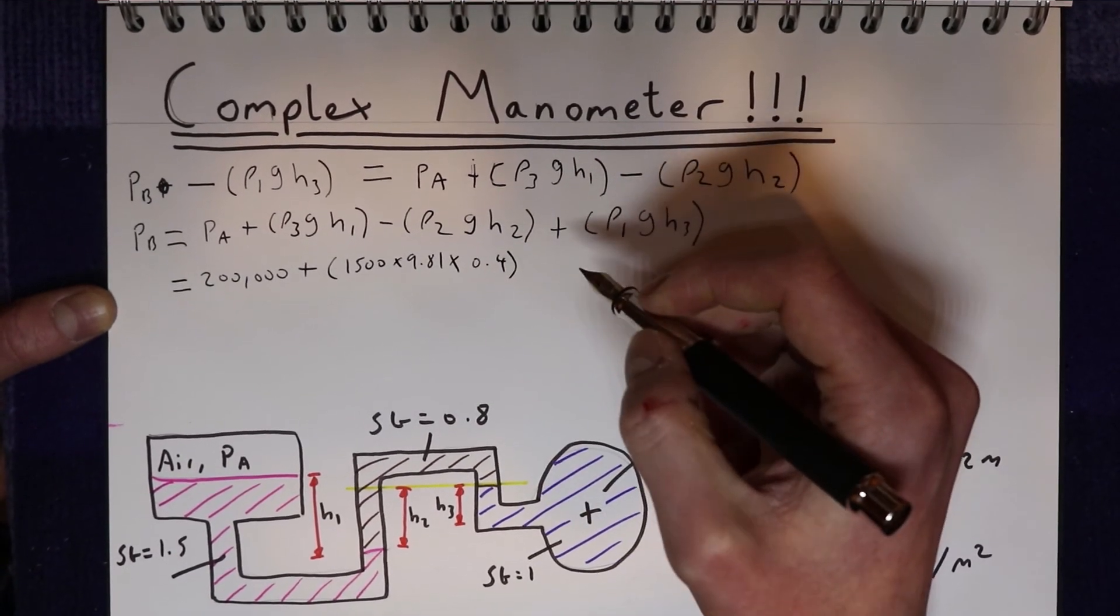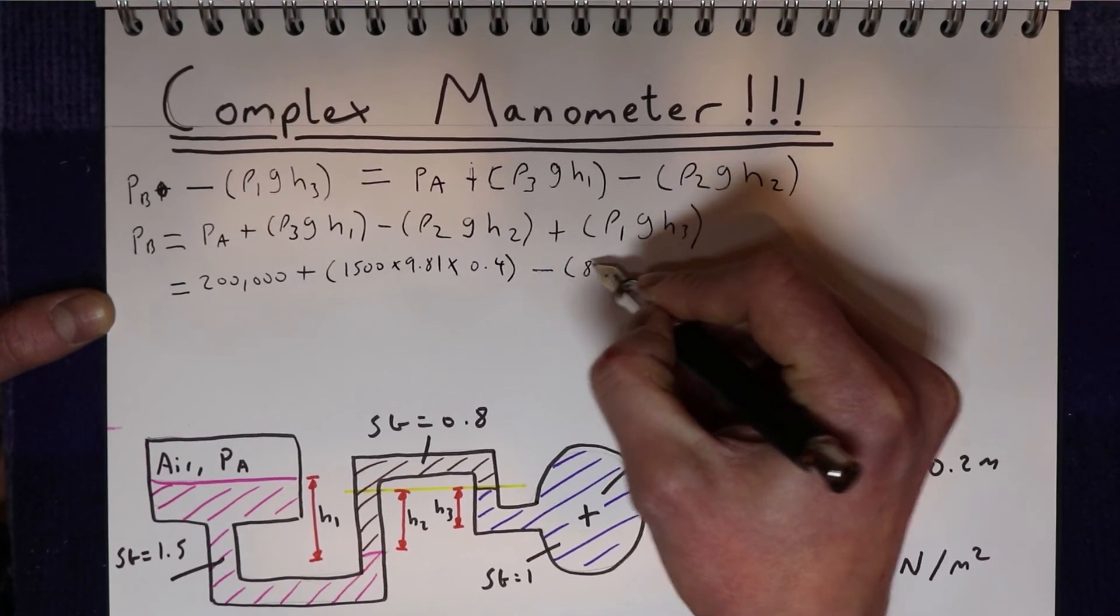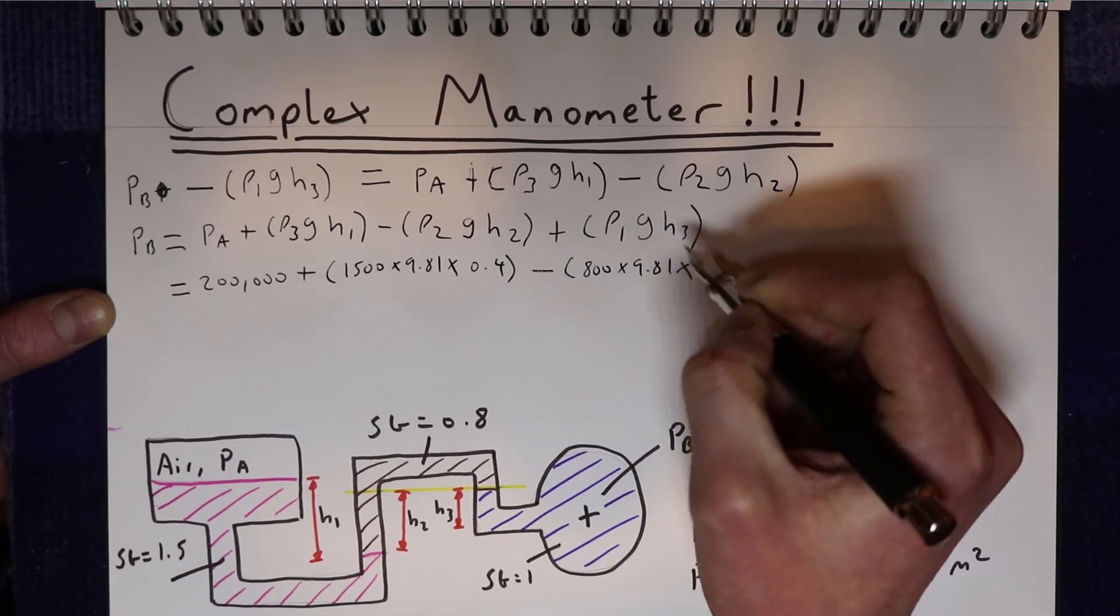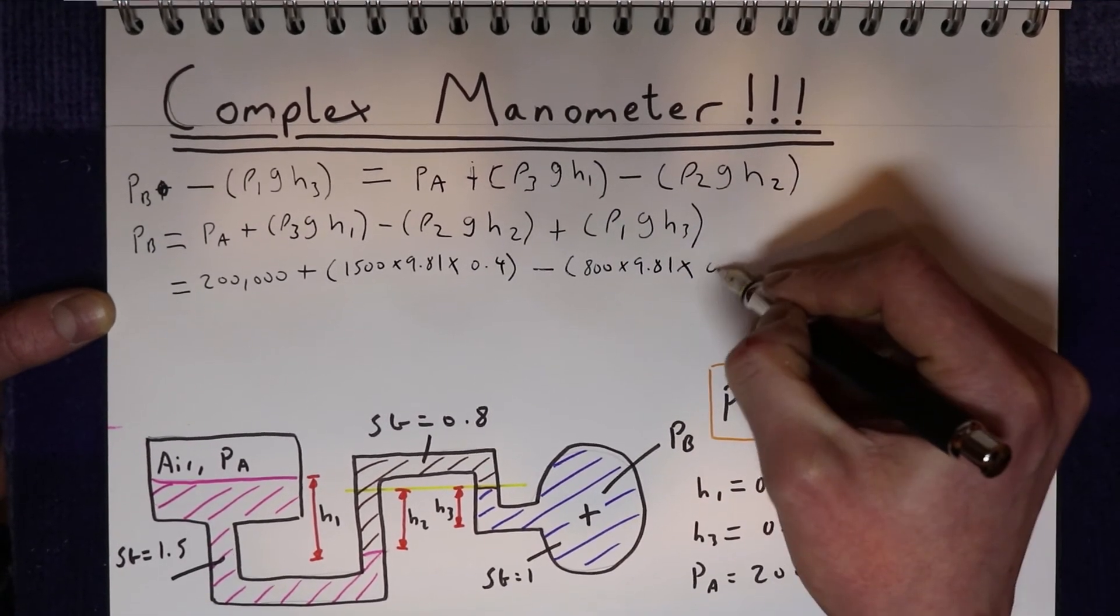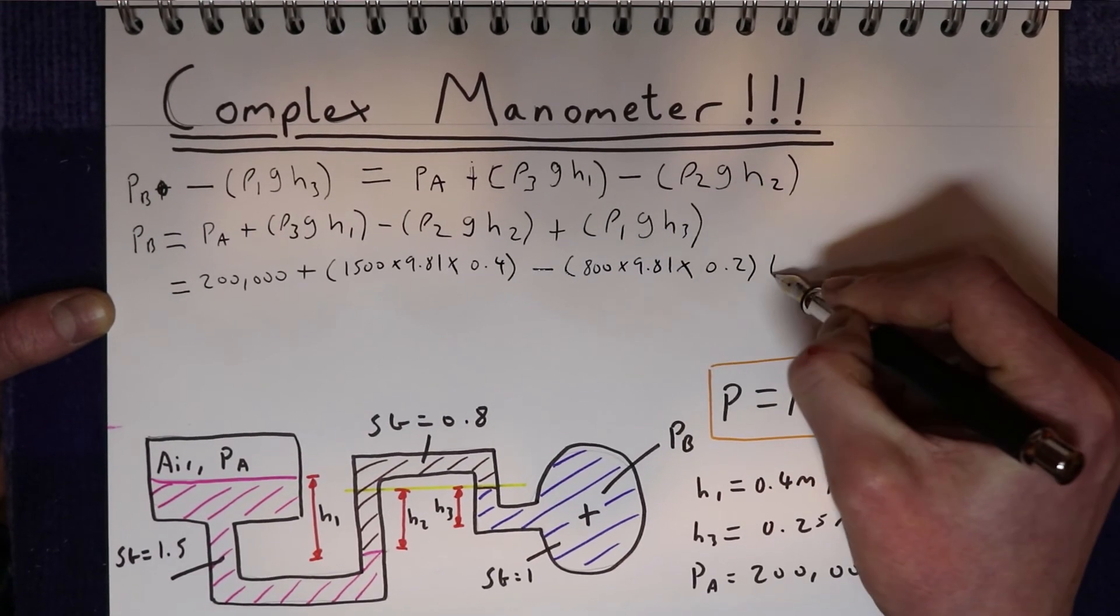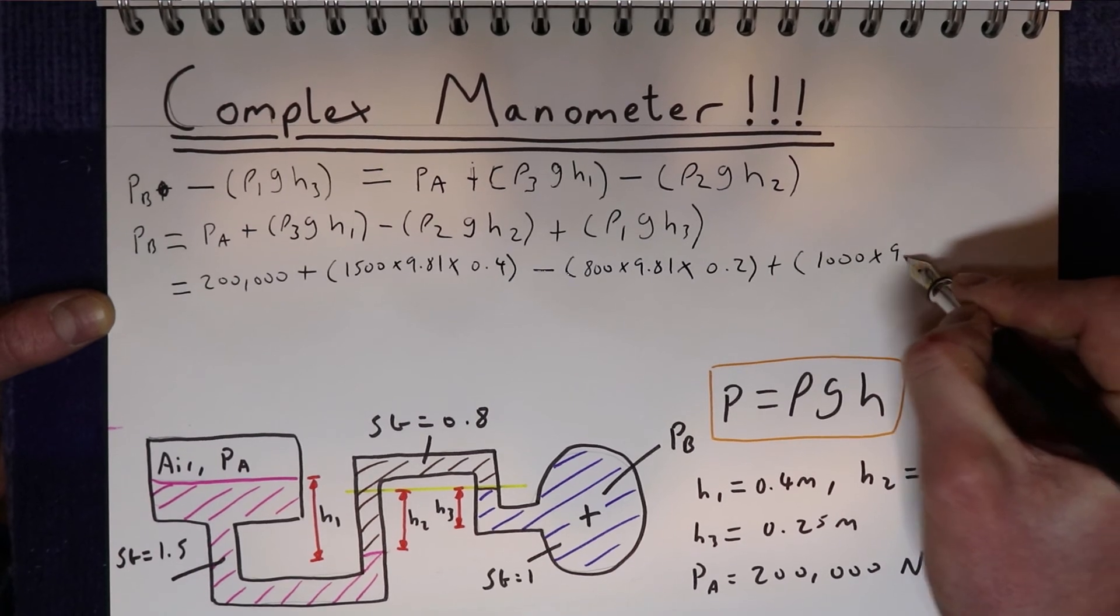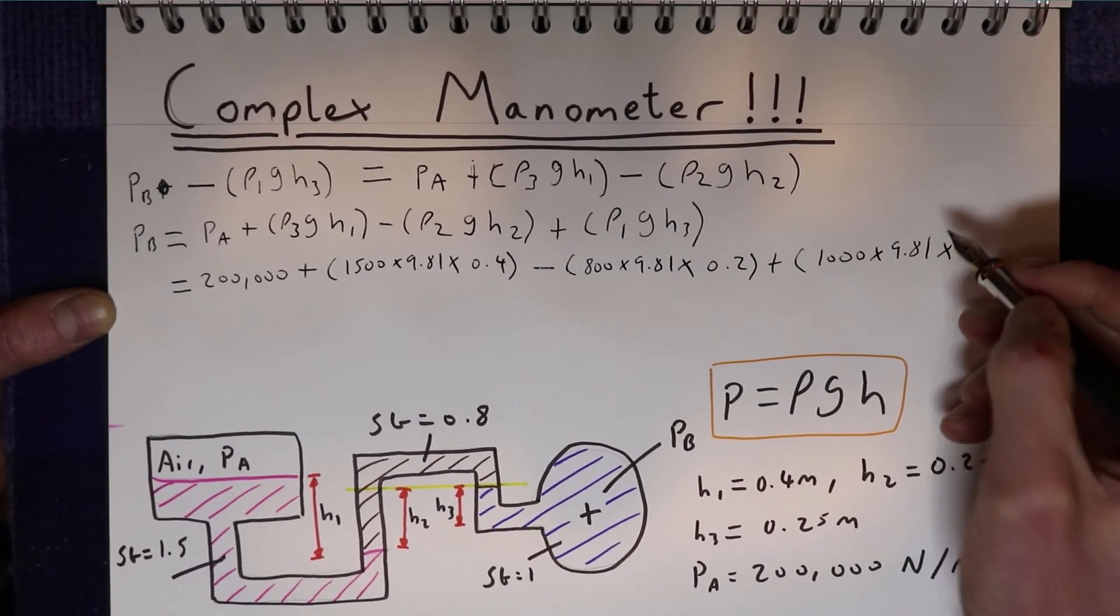Minus density 2, which is 800 times gravity, times by h2, which is 0.2 meters. And then plus density 1, which is the density of water, times 9.81 times h3, which is 0.25.